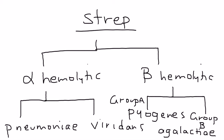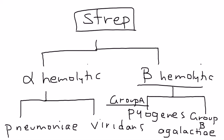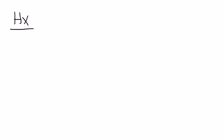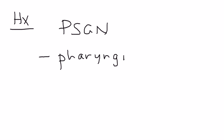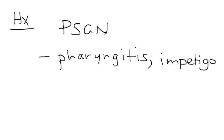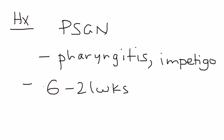Beta-hemolytic group A strep — Strep pyogenes — is the pathogen involved in post-strep GN. It occurs after an infection with strep, most commonly either a pharyngitis or an episode of impetigo, which is a skin rash.